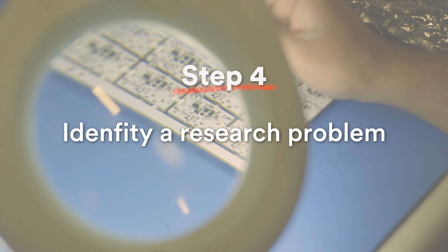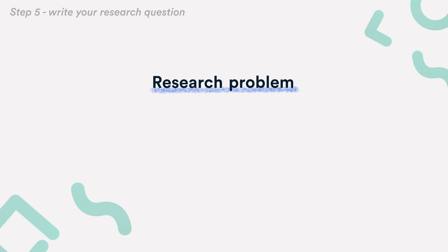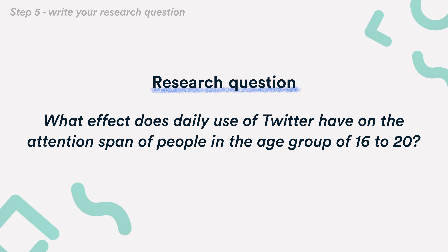Step 4: Identify a research problem. We've already established that adolescents are one of the most active age groups on social media platforms. But only a scarce amount of research has been done on the effect social media has on the younger generation's attention span — so this will be my research problem.